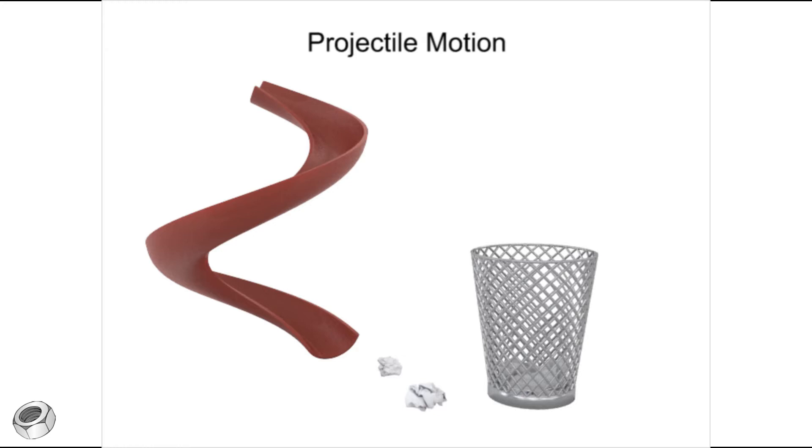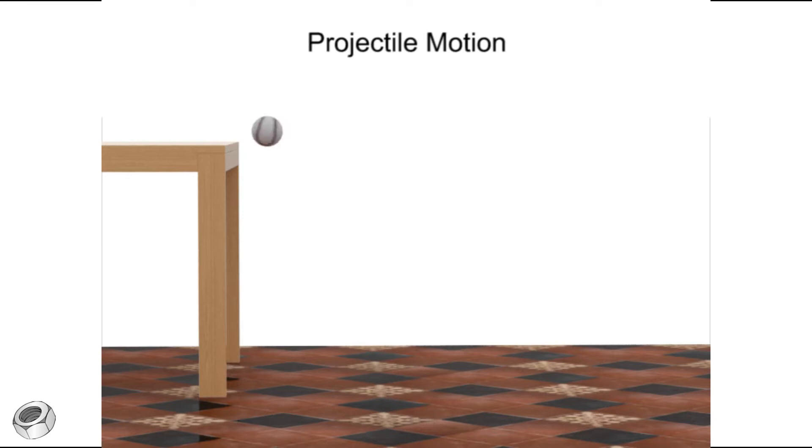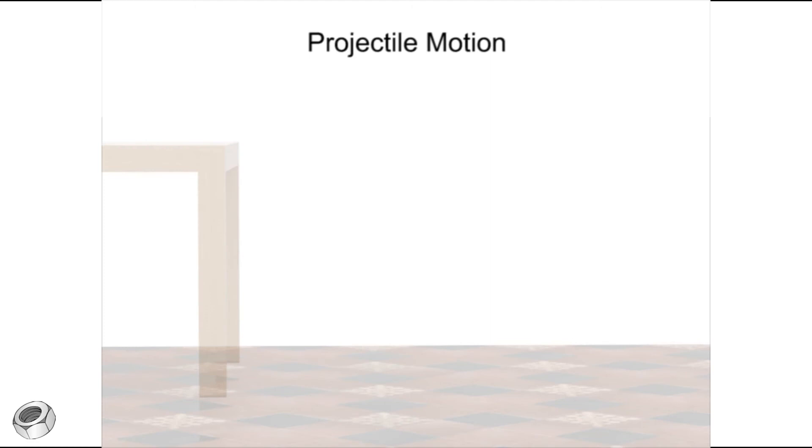To better understand the nature of projectile motion, consider a ball rolling off a table. Notice that as the ball leaves the table and falls through the air, its path follows a downward arc.